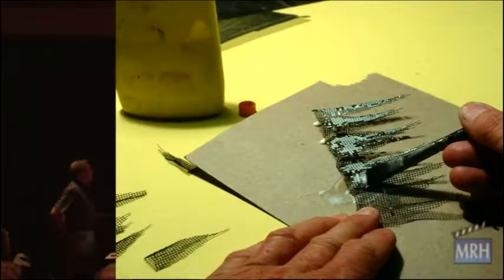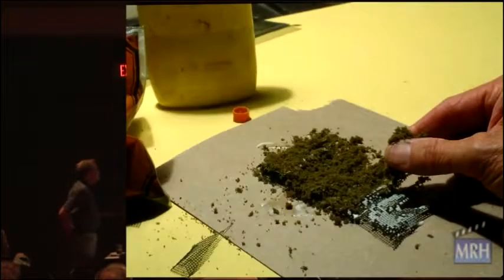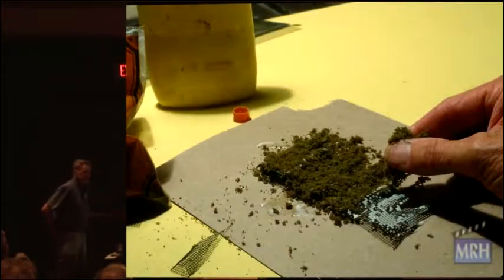Then I liberally apply Elmer's glue. And I put Woodland Scenics foliage and grass and everything. Use the dead stuff, the stuff that is, don't use anything too bright.